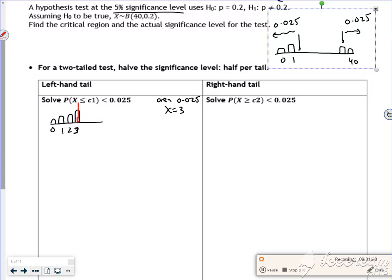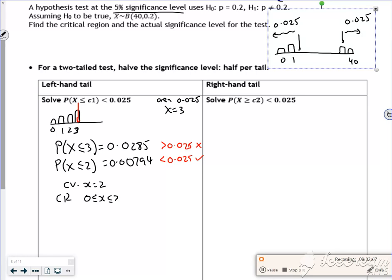I have to look at the probability that x ≤ 3 and x ≤ 2. They give me probabilities of 0.0285 and 0.00794. The first one is bigger than 0.025, so that's out. The second is less than 0.025, so that's in. My critical value is x = 2, and my critical region is 0 up to 2.